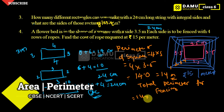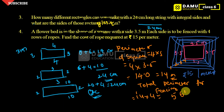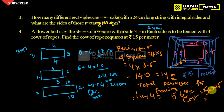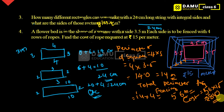14 into 4: 4 times 4 is 16, carry 1; 4 times 1 is 4, plus 1 is 5 — so 56 meters total for fencing. Then the total cost is 56 into 15 rupees per meter. 56 times 15: 15 times 6 is 90, 15 times 5 is 75; 75 plus 90 gives 840 rupees. Thanks for watching, please subscribe if you like!